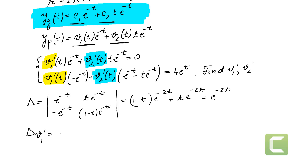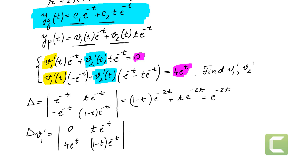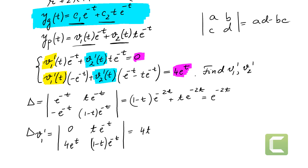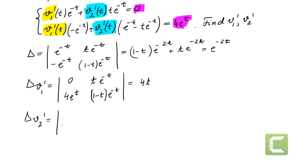For delta_v1', we replace the first column of delta with the right-hand side values [0, 4e^t]. The second column stays the same: [t·e^(-t), (1-t)·e^(-t)]. Computing the 2×2 determinant (ad - bc), we get delta_v1' = -4t. Then for delta_v2', we replace the second column with [0, 4e^t] while the first column stays the same, and we compute delta_v2' = 4.